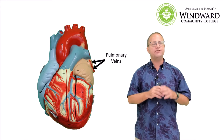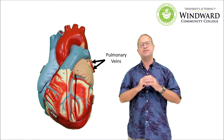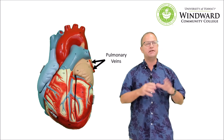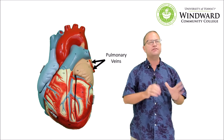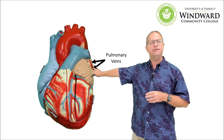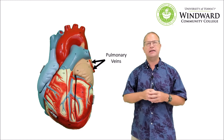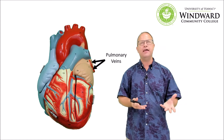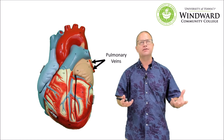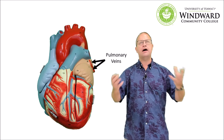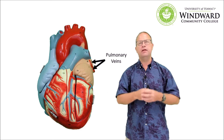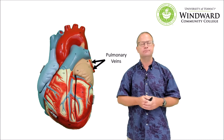Pulmonary veins are a little difficult to see on this particular image of the heart because they're more towards the backside. But we do have two pulmonary veins on each side, and these pulmonary veins are bringing blood back to the heart from the lungs — specifically bringing oxygen-rich blood back from the lungs to the left atrium.